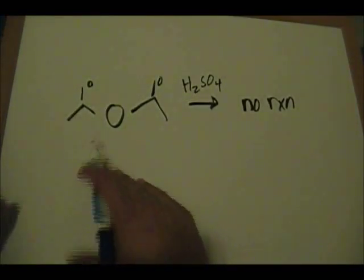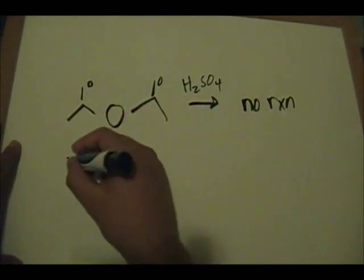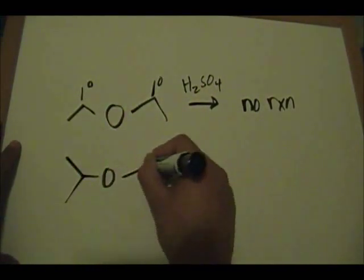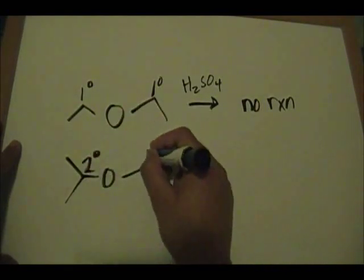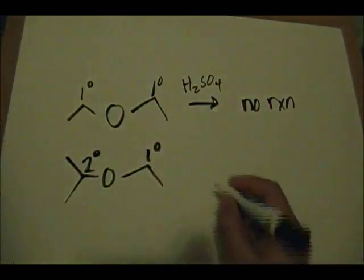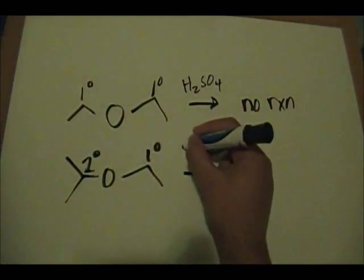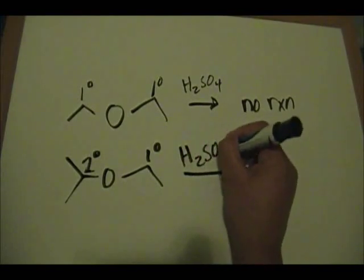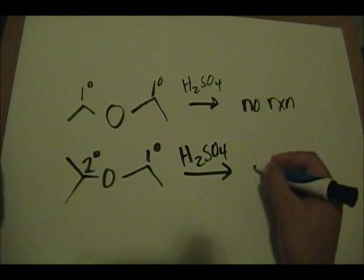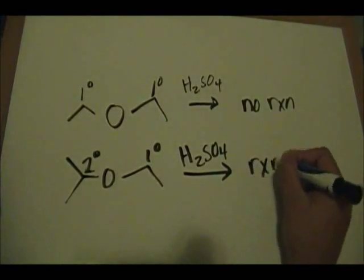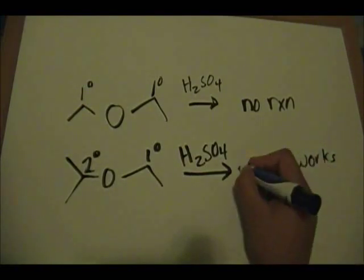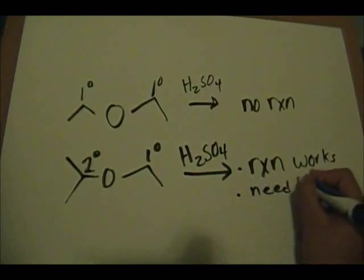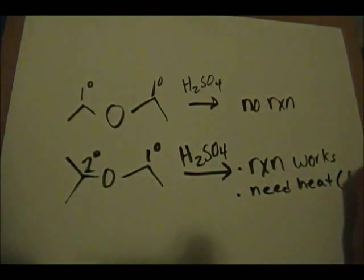Now, what if we have a secondary carbon directly attached to the oxygen? This carbon is secondary and this one is primary. If we react it with H2SO4, the reaction will occur — but you need heat, which is symbolized as delta.